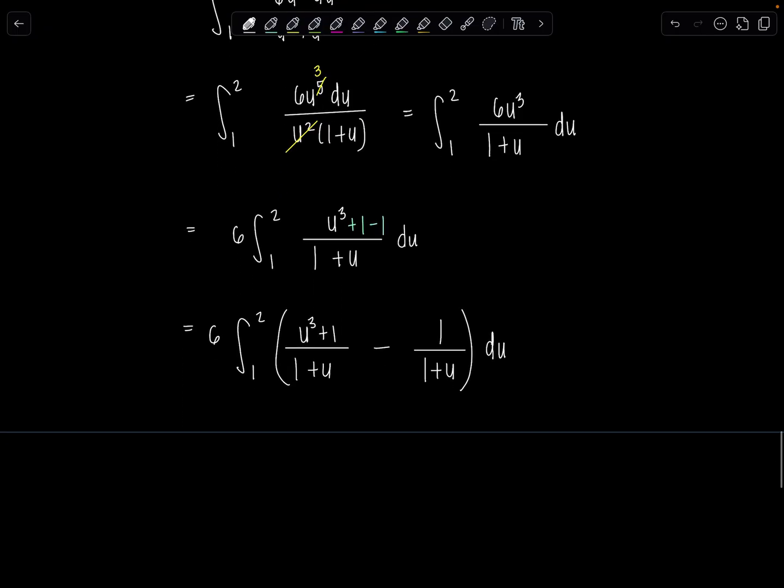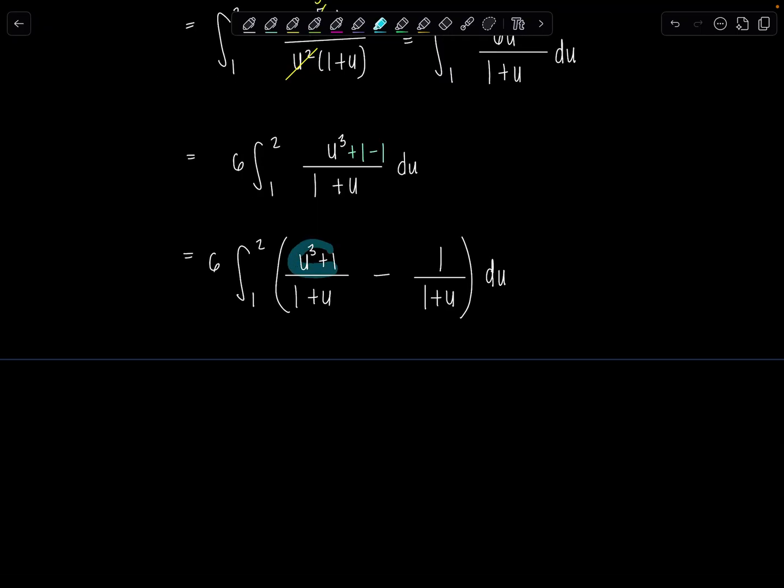Now u cubed plus 1 up here in the numerator, that's a sum of cubes. I can factor it. Do you remember how a sum of cubes factors? I hope so. That's the thing with math, you can't forget anything. So u cubed plus 1 is going to factor into u plus 1 times u squared minus u plus 1. And then this is all over 1 plus u. Can you see where this is going?